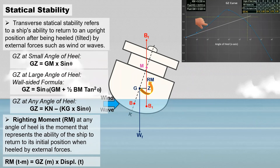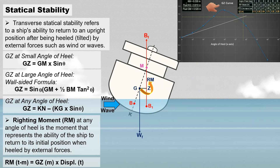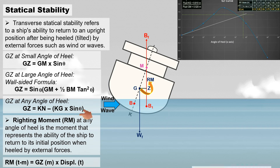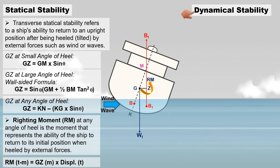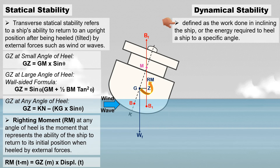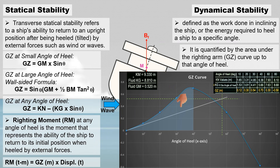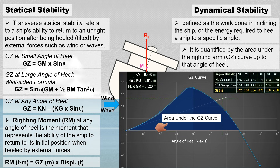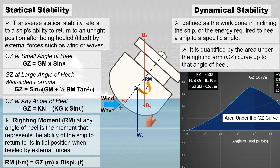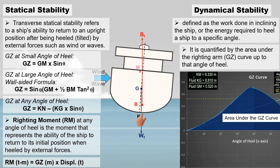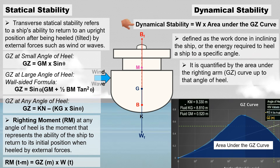Before we proceed to a graphical representation of the righting lever — the GZ curve — and calculating the moment of statical stability or righting moment, let's first define dynamical stability. Dynamical stability is defined as the work done in inclining the ship, or the energy required to heel a ship to a specific angle. It is quantified by the area under the righting arm, known as the GZ curve, up to that angle of heel. This area represents the energy needed to incline the vessel and provides insight into the ship's ability to resist capsizing under dynamic conditions. A larger area under the GZ curve indicates greater dynamical stability, meaning the ship can absorb more energy from external forces without capsizing.